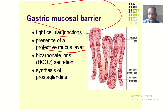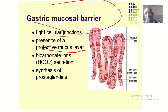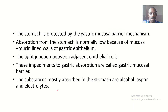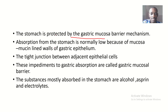The barrier protects the stomach from the action of HCl. From chemistry, we know hydrochloric acid is harmful, and from gastrointestinal physiology we see that this harmful acid is actually secreted in the stomach — so the stomach needs protection, which is provided by the gastric mucosal barrier mechanism.